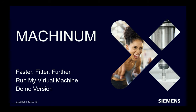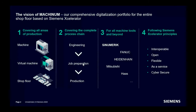Thank you, Dan. You should now have my screen. We're going to talk about the Machinum product portfolio. Machinum is kind of a new branding on something we've been market leaders in for some time — the digitalization product portfolio. That is our answer to how we support Industry 4.0 and the progression that all these manufacturers and end users are undertaking to really streamline their operations. Run My Virtual Machine demo version is under the Machinum umbrella.